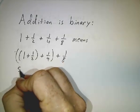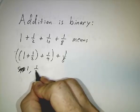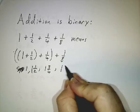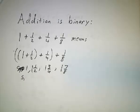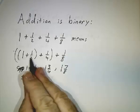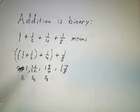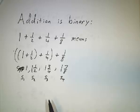Our running sum starts at 1. After adding 1/2, we get 1 and 1/2. Add 1/4 and we get 1 and 3/4. Add 1/8 and we get 1 and 7/8. We give names to these running sums: S1 is the first running sum — just the first number. S2 is what you get after adding the first two numbers. S3 after three, S4 after four. In this case, 1 plus 1/2 plus 1/4 plus 1/8 equals 1 and 7/8.